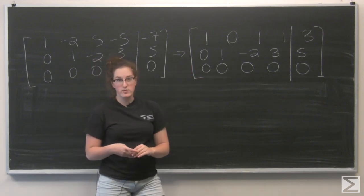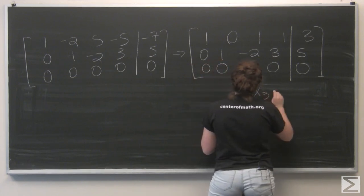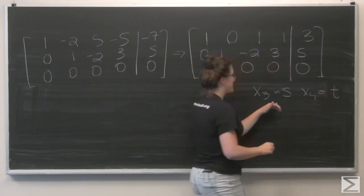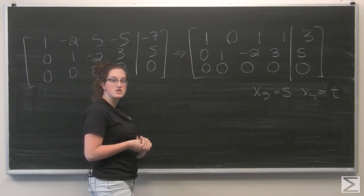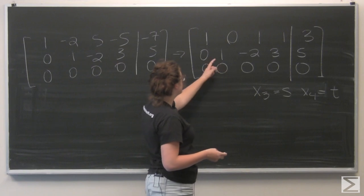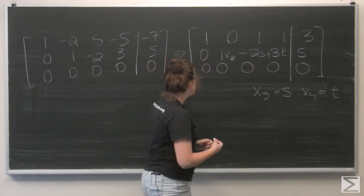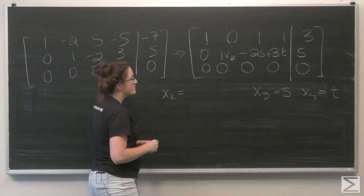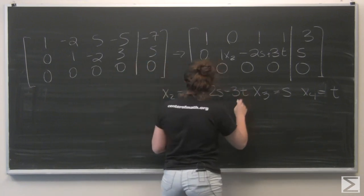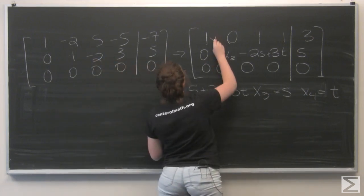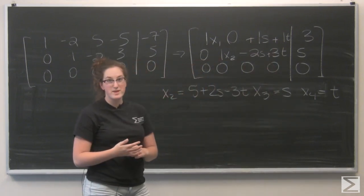So now I just need to identify my free variables. They're going to be x3 and x4, since there are no leading ones in these last two columns. I'm going to call x3 s and x4 t. Now let's look at the second row so we can get an expression of s and t for x2. So x2 minus 2s plus 3t equals 5. So I'm going to solve for x2: I'm going to get 5 plus 2s minus 3t. And then I can do the same thing for x1. I have x1 plus s plus t equals 3. So x1 equals 3 minus s minus t.